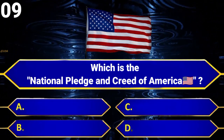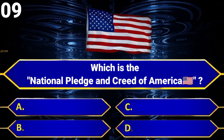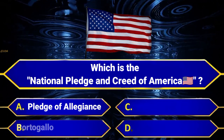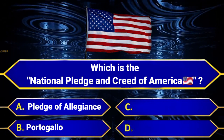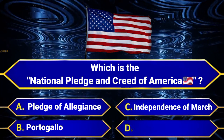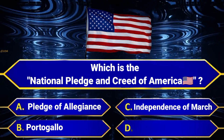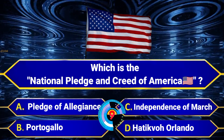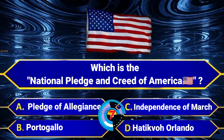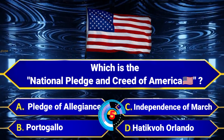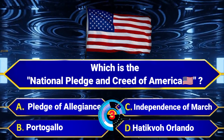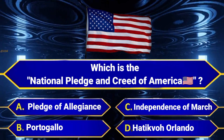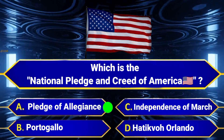Which is the national pledge and creed of America? Option A, Pledge of Allegiance. Option B, Porto Gollo. Option C, Independence of March. Option D, Hortico Lando. Answer is Option A, Pledge of Allegiance.